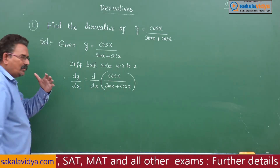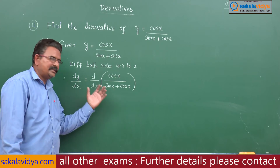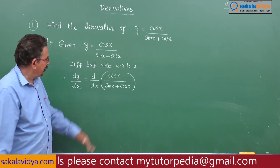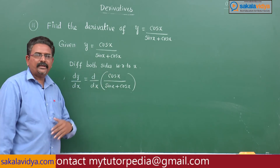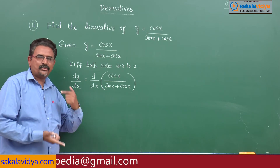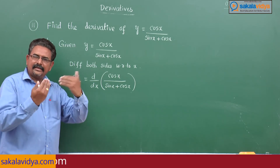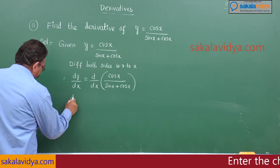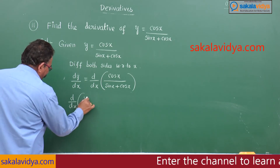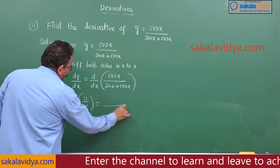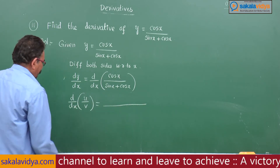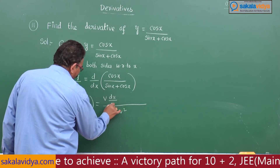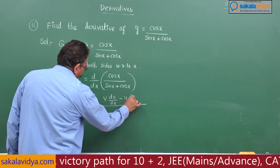How to solve this problem — the strategy is to select the appropriate suitable formula. This is in the form of u by v, so the u by v rule has to be applied. Let us recall the formula: d by dx of u by v equals, in a suggestive way, v square in the denominator, v times du by dx minus u times dv by dx.